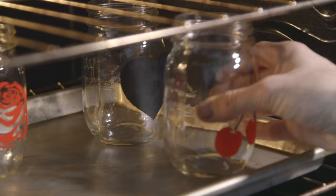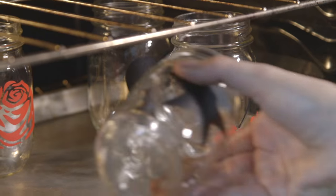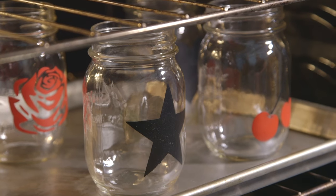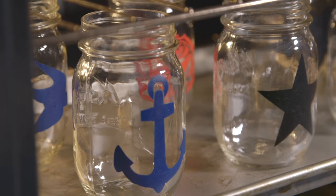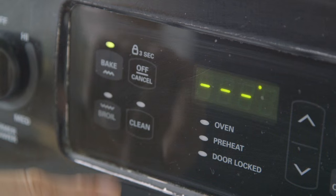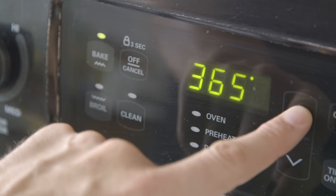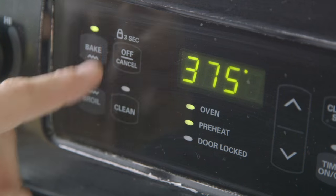So you want to place these in the oven while the oven is cold, and they're going to essentially heat up with the oven so that your glass won't crack. You preheat your oven to 375 while the glass is in there already.